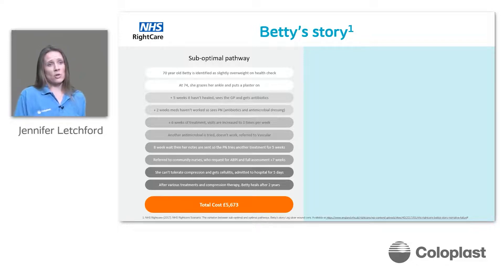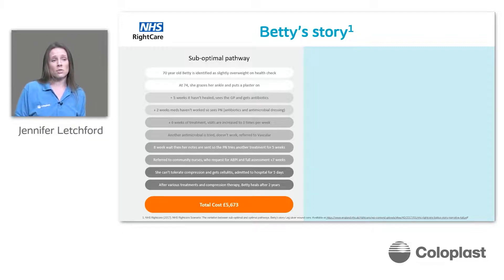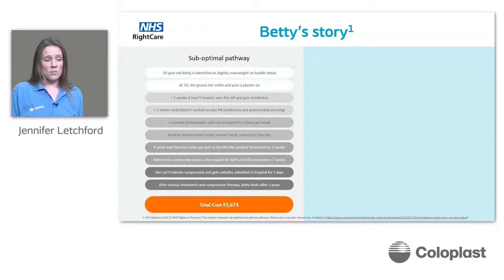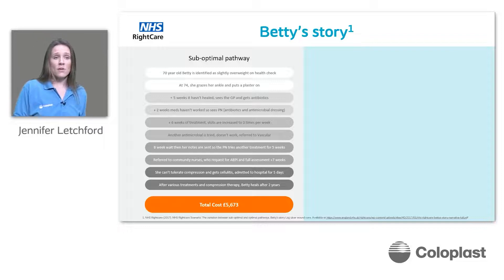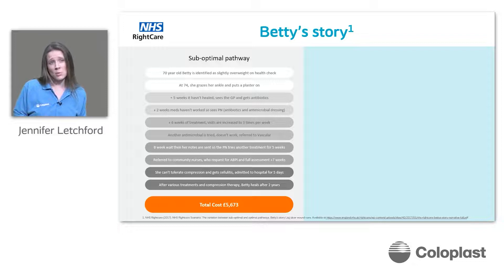The GP gave her antibiotics, and a couple of weeks after that it still hadn't progressed towards healing, so she came back and saw the practice nurse. She had various different treatments, but a referral to the vascular team was made. She had an antimicrobial treatment on, but again that didn't help with Betty's wound healing. A further eight weeks on and various treatments later, Betty was seen in the hospital setting by the vascular team. By this point she was needing community nurses to visit her at home, because she had deteriorated so much.